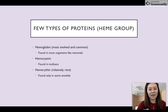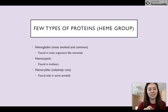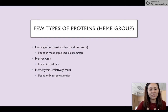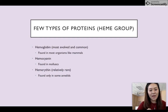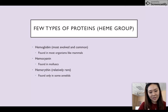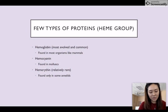There are a few types of proteins with a heme group. The first one is hemoglobin, which is the most common and most evolved, found in most organisms like mammals. Then there's hemocyanin, which is mostly found in mollusks. And the most relatively rare one is hemerythrin, which is difficult to find and is only found in some annelids.